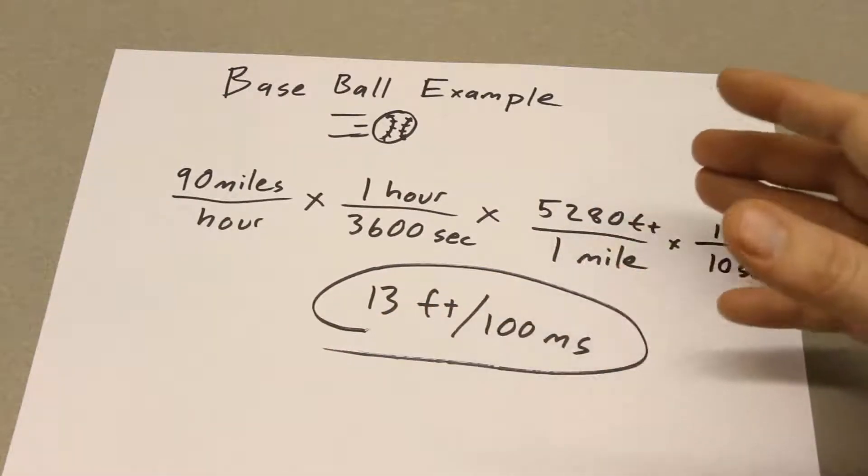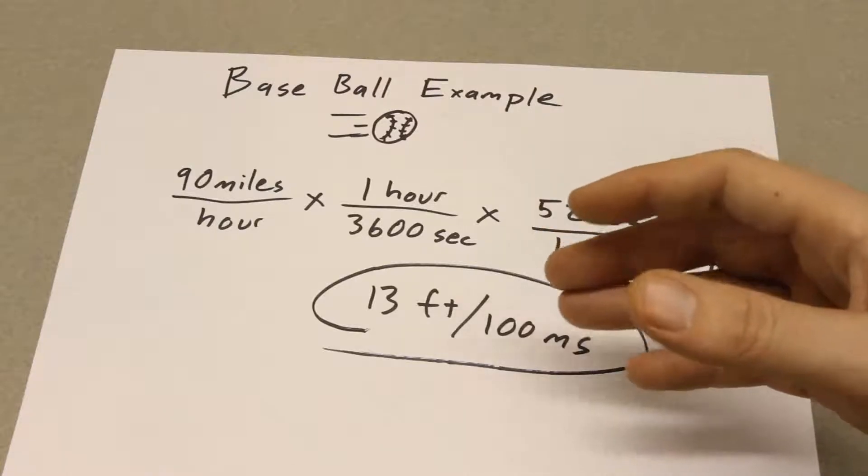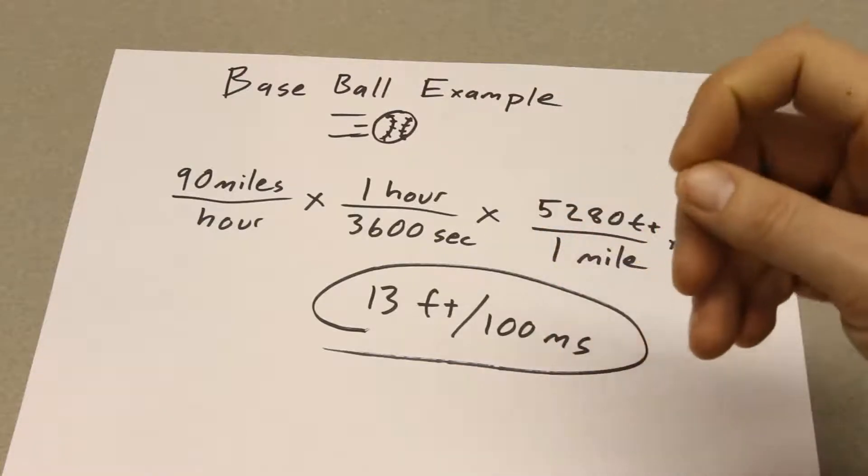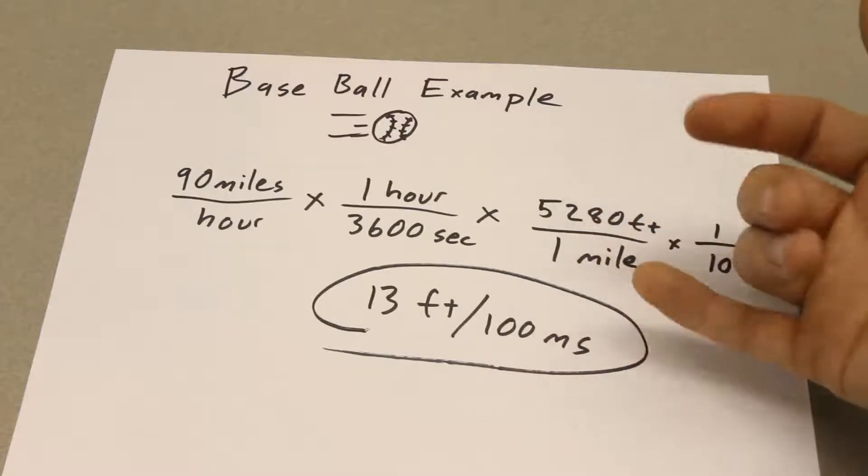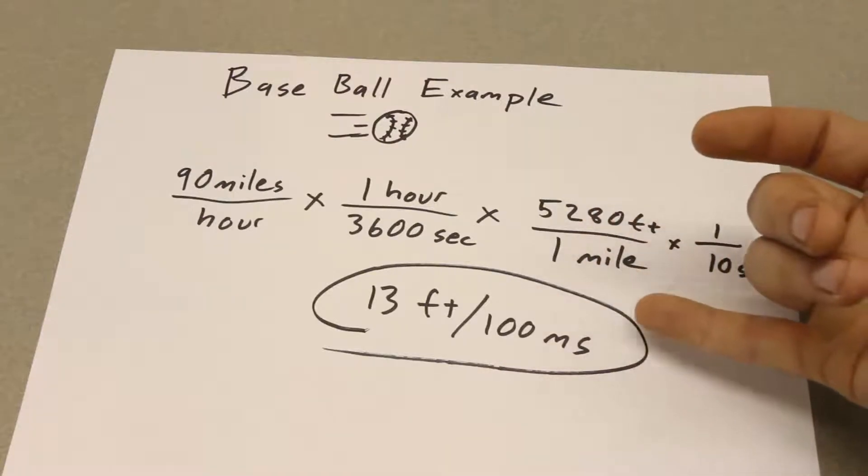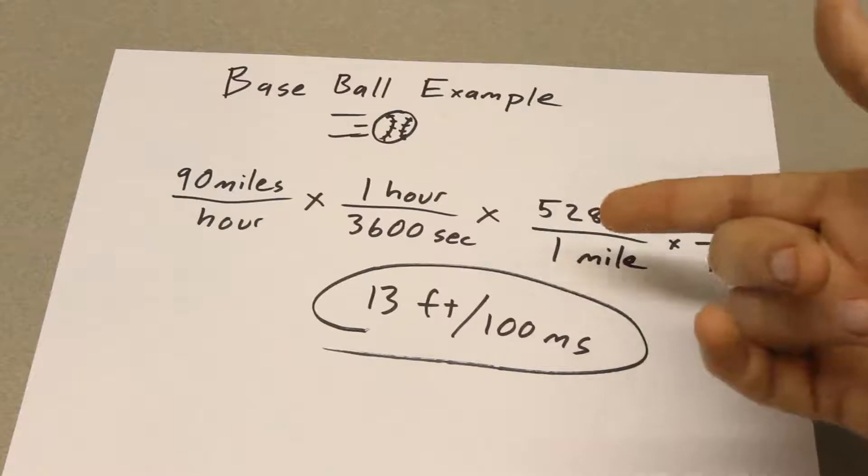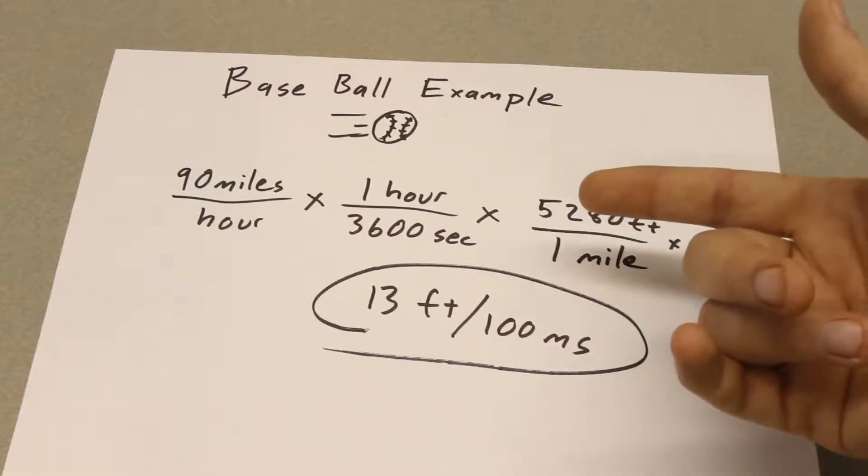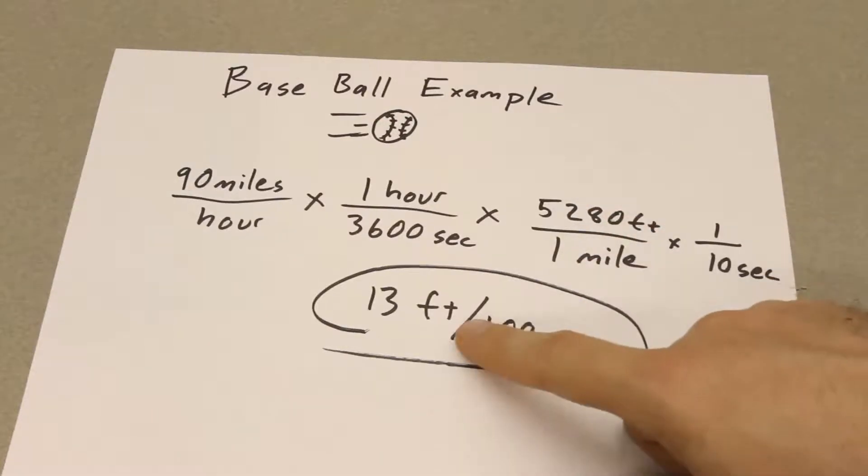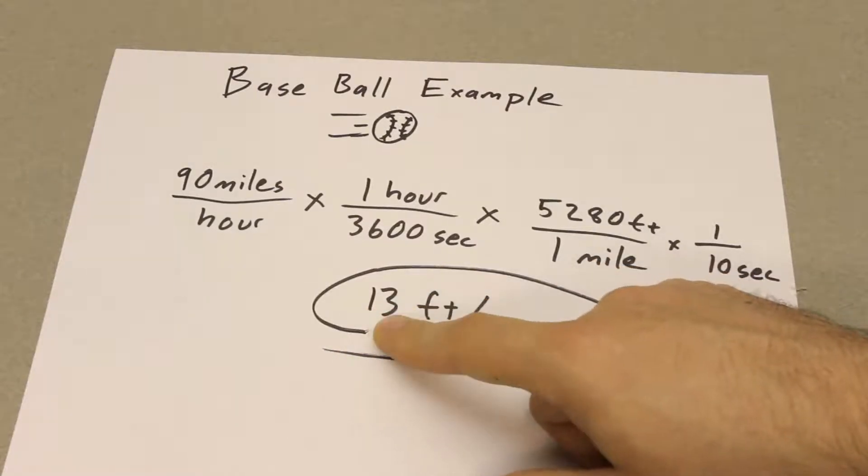Even if you discount the shutter lag and just go with shutter speed, then what you've got is, let's say your shutter can go at 1 millisecond, or a shutter speed of 1,000th of a second.